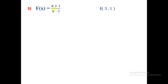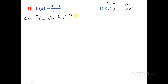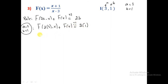Part 3: f(x) = (x+1)/(x-3), and we have I(3, 1). So a = 3 and b = 1. Let's write the rule: f(2a - x) + f(x) = 2b becomes f(2×3 - x) + f(x) = 2×1 = 2. Simplifying: f(6 - x) + f(x) = 2.